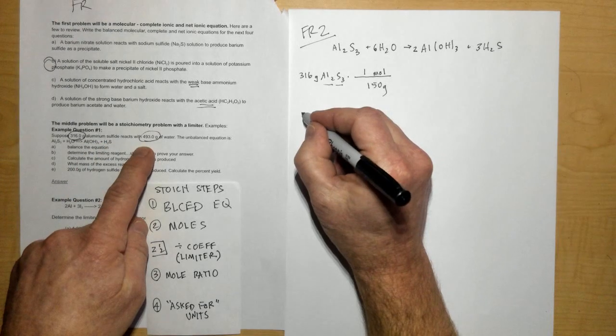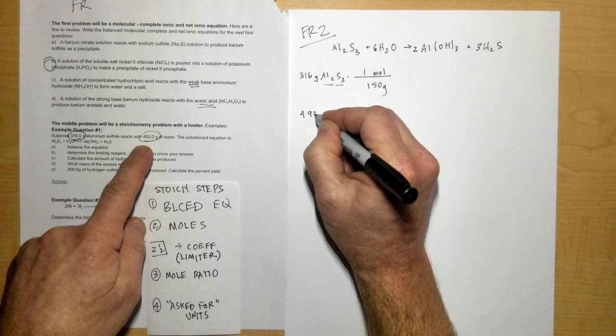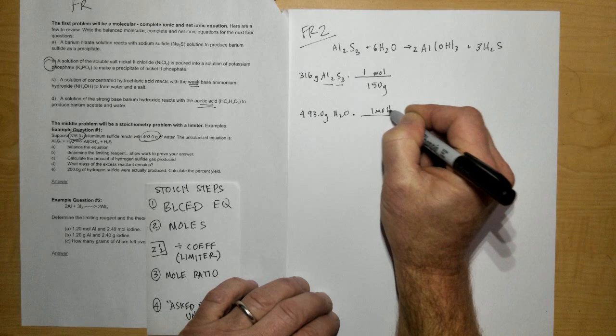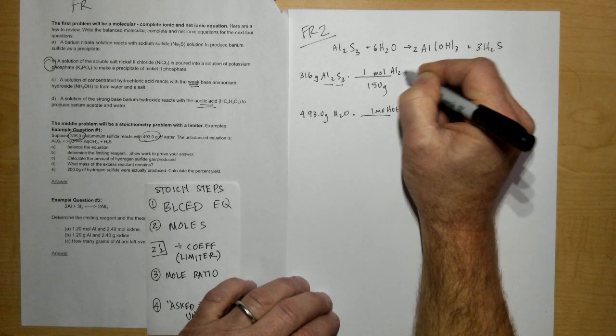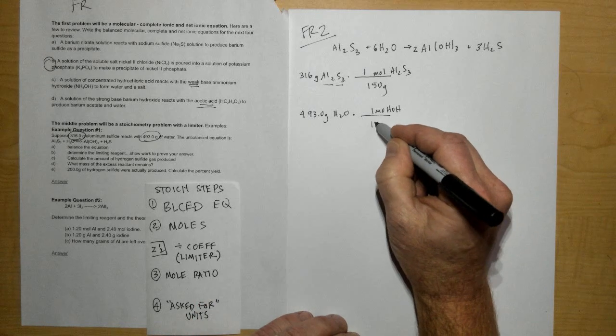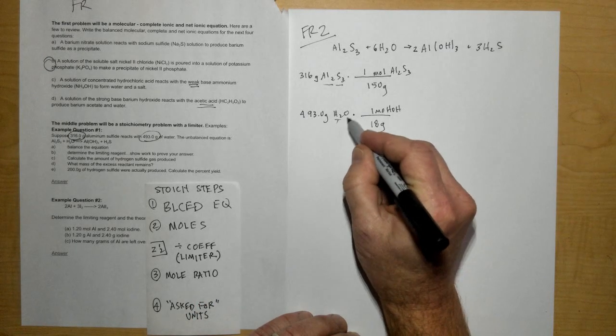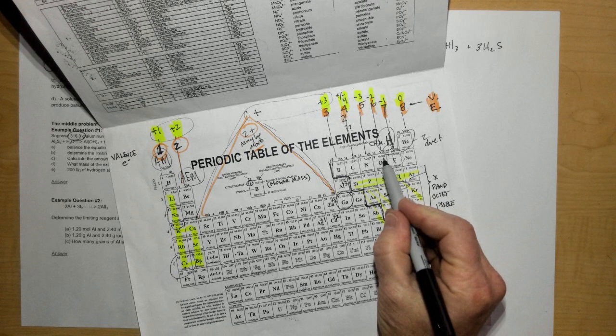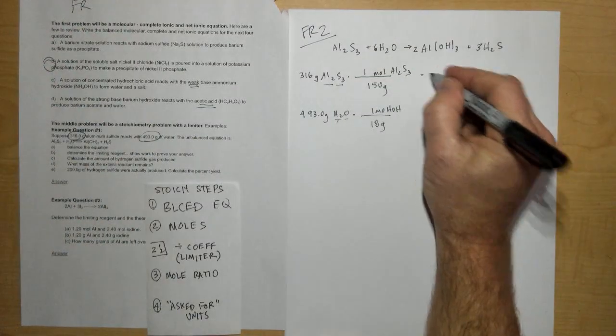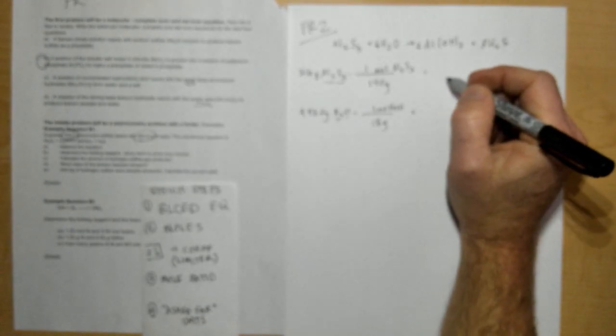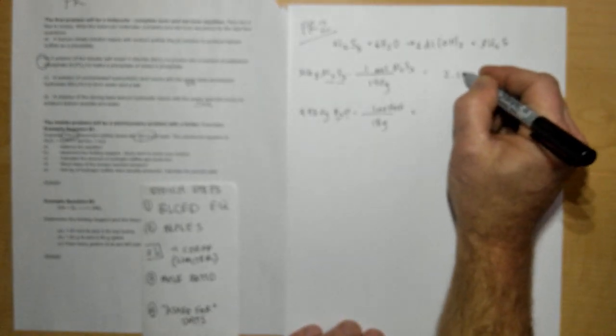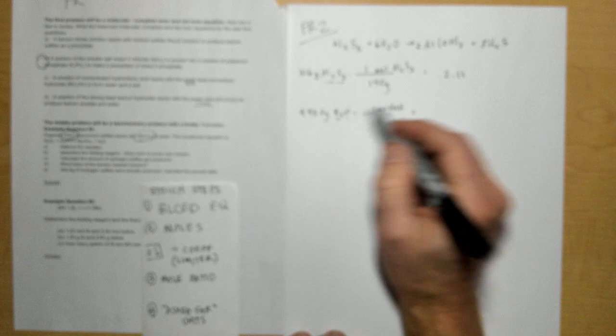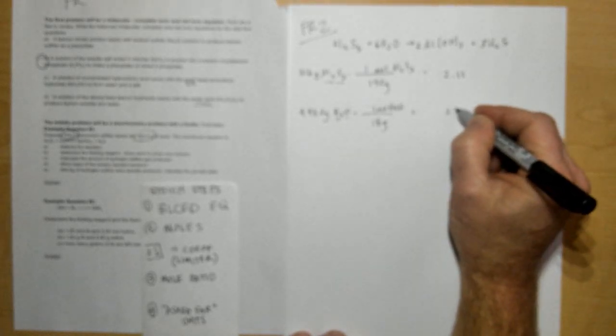I also need to convert my water, which is 493.0 grams of H2O. In one mole of H2O, there are 18 grams—one for each hydrogen and 16 for oxygen. So 316 divided by 150 gives me 2.11 moles. We'll do this number of sig figs to get to our next part. And 493 divided by 18 gives me 27.4 moles.